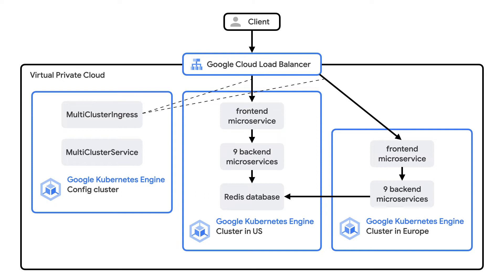That is, with one exception: the application's cart service stores the state of the user's shopping cart while they're visiting the site using a Redis database. This Redis instance is deployed to the US cluster only, and back-end services from the EU cluster access it using another Kubernetes resource called a multi-cluster service.